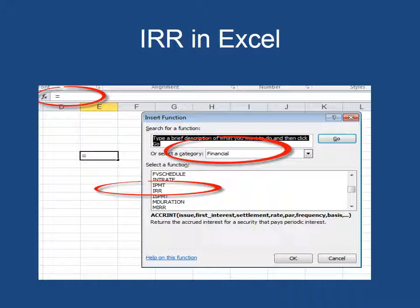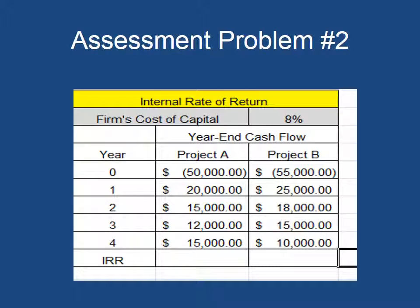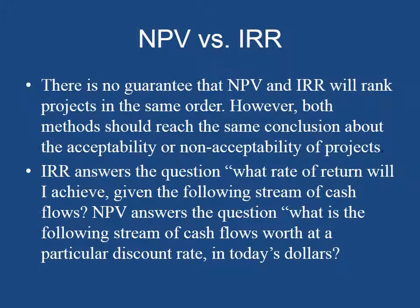The Excel setup here is the same — I've circled everything so you know what you're looking for. This time, all you're looking for is IRR. It's the same setup as Assessment Problem 1, except now you're solving for IRR. Just follow the steps, and if you have a difficult time, please feel free to contact me. These are two very simple problems in Excel, but if you don't know Excel, I understand they're not simple — so please reach out if you need help.